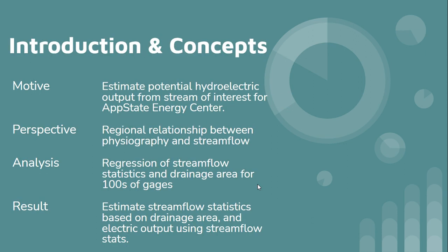I'll introduce the concepts and background — the rationale for this project. The Appalachian State Energy Center receives requests for estimates on the feasibility of installing microhydroelectric generation units. They receive requests from property owners interested in installing this form of renewable energy. The perspective I take in addressing this issue of estimating stream flow and power output is based on the regional relationship between physiography and stream flow.